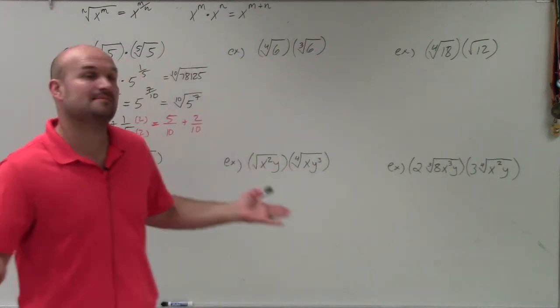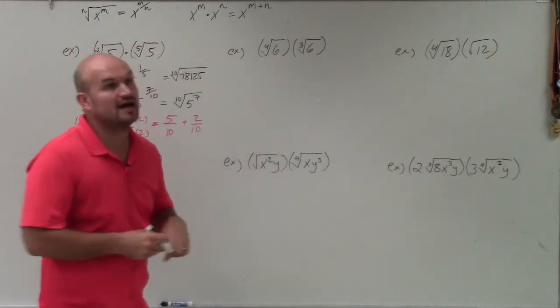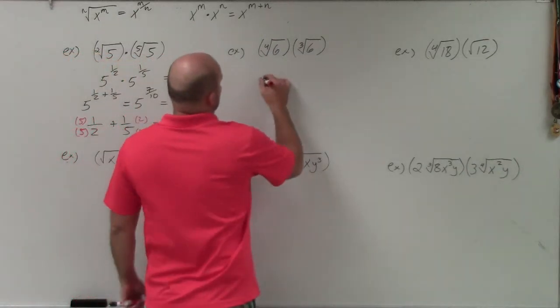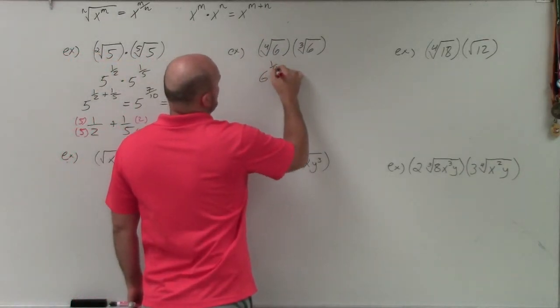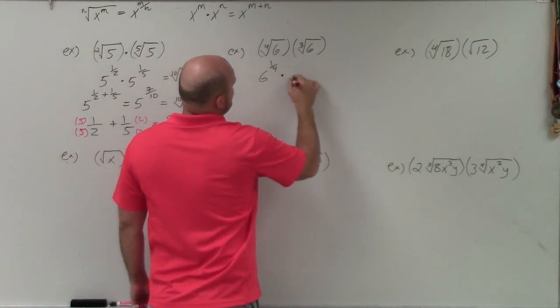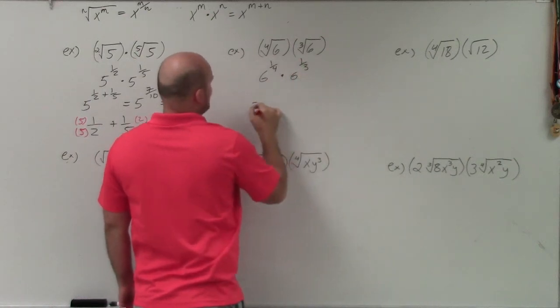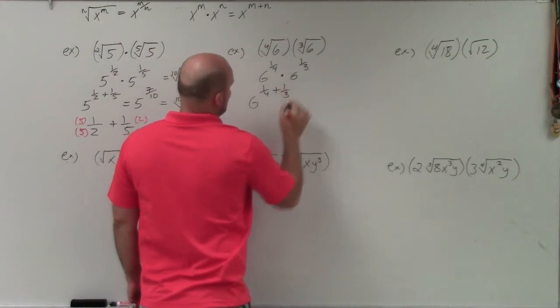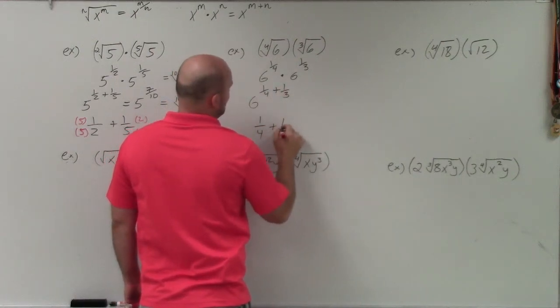And to the next one, we have the exact same thing, except here, we know our two indexes are 4 and 3. So therefore, again, I'll just rewrite this as 6 to the 1 over 4 times 6 to the 1 over 3. That's equivalent to 6 to the 1 4th plus 1 3rd.